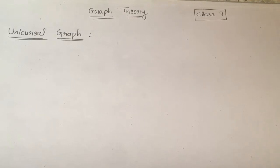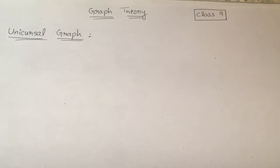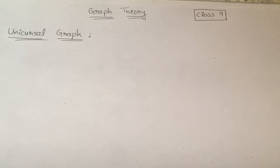In this video we will learn one more type of graph, that is the Unicursal graph. We know the Euler graph. An Euler graph is a graph which has got an Euler line. An Euler line is a closed walk that includes all the edges of the graph without retracing any edge.